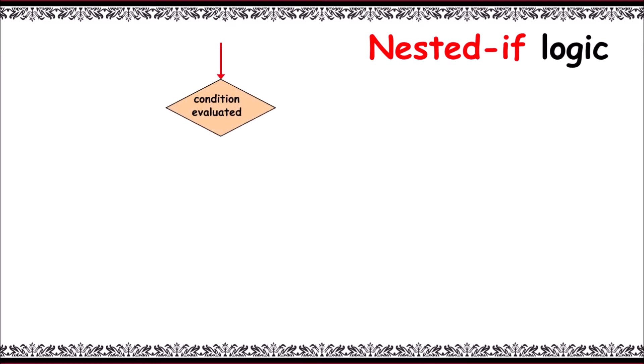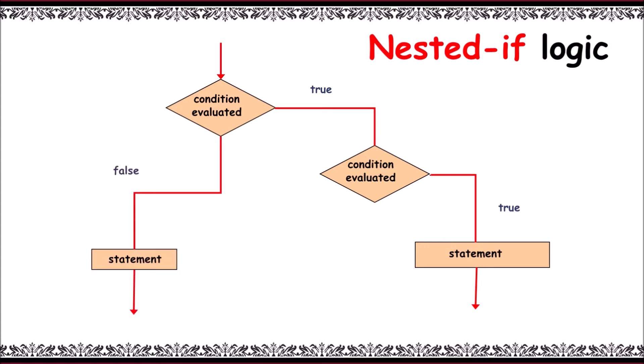If it returns true, then another condition is evaluated. If it also returns true, then certain statements in the block get executed. Now if the main condition is false in the first evaluation, it has another set of statements to work. If the first condition is true and second condition is false, it still has another set of statements to execute.